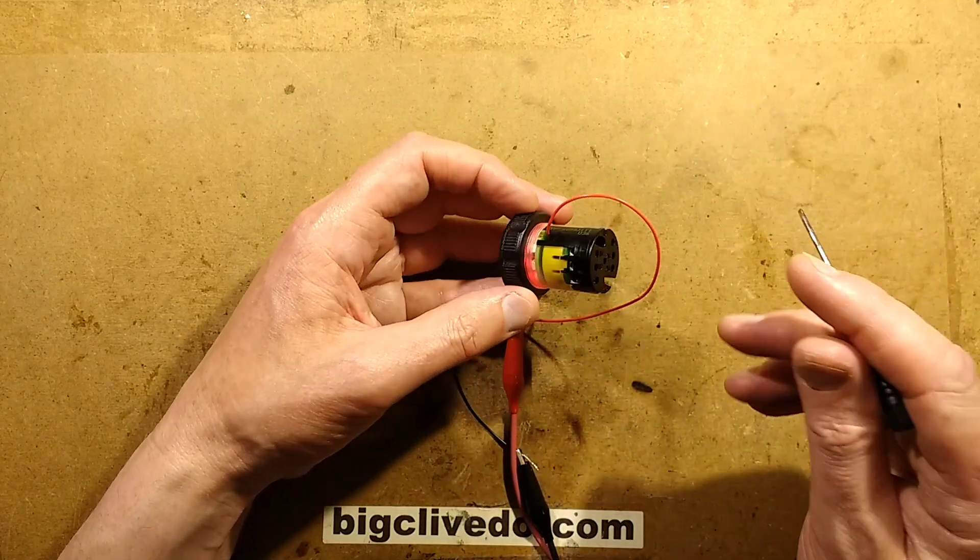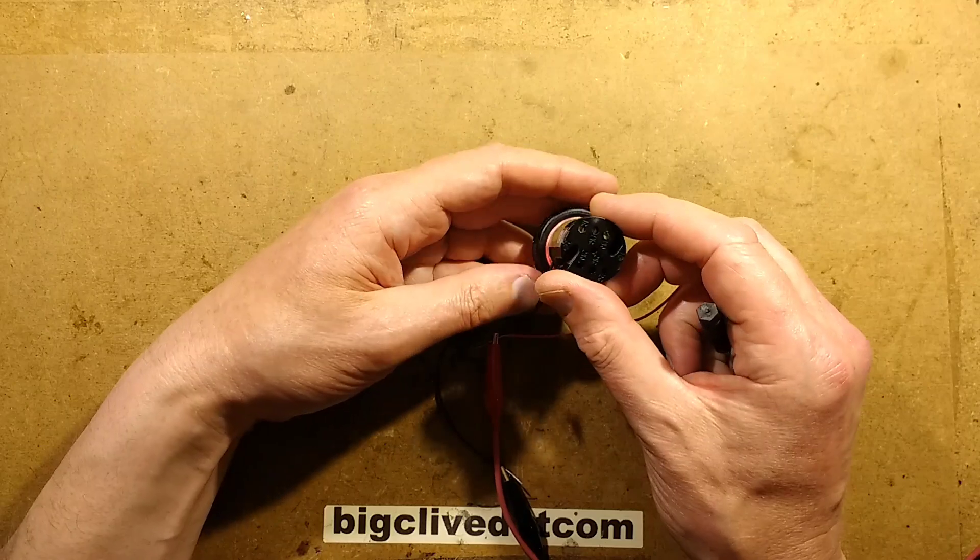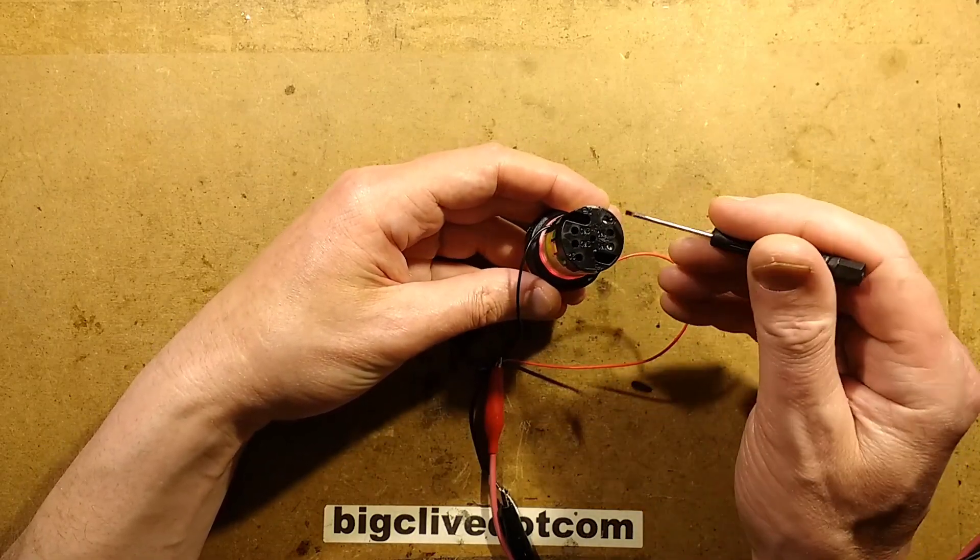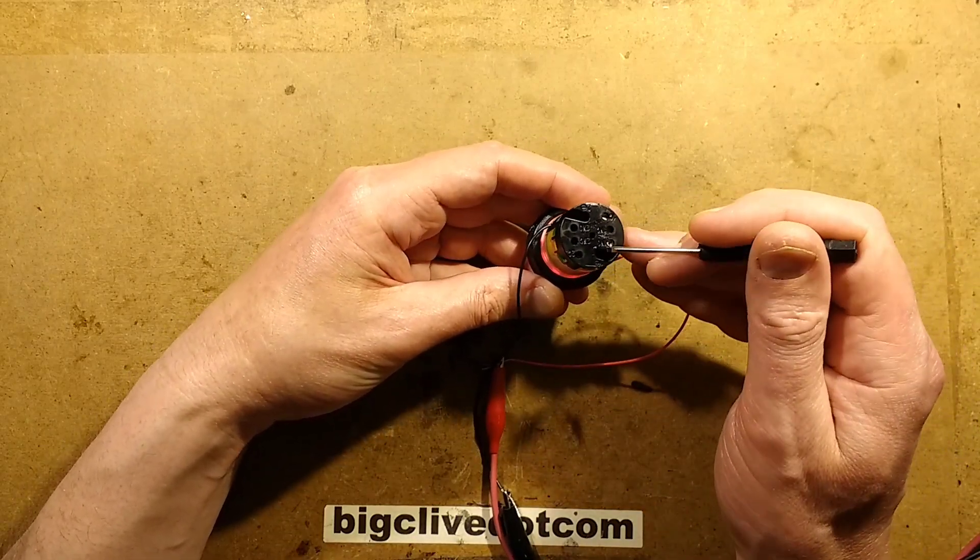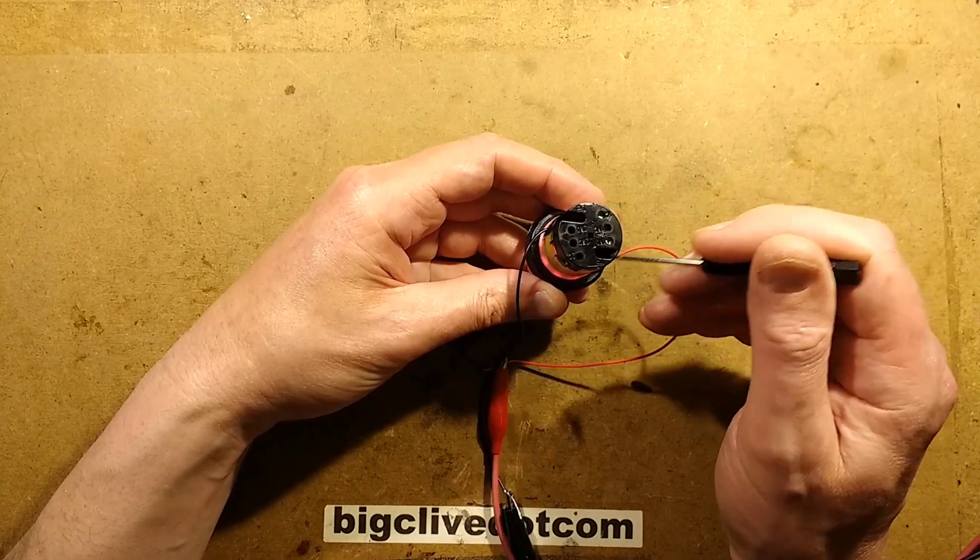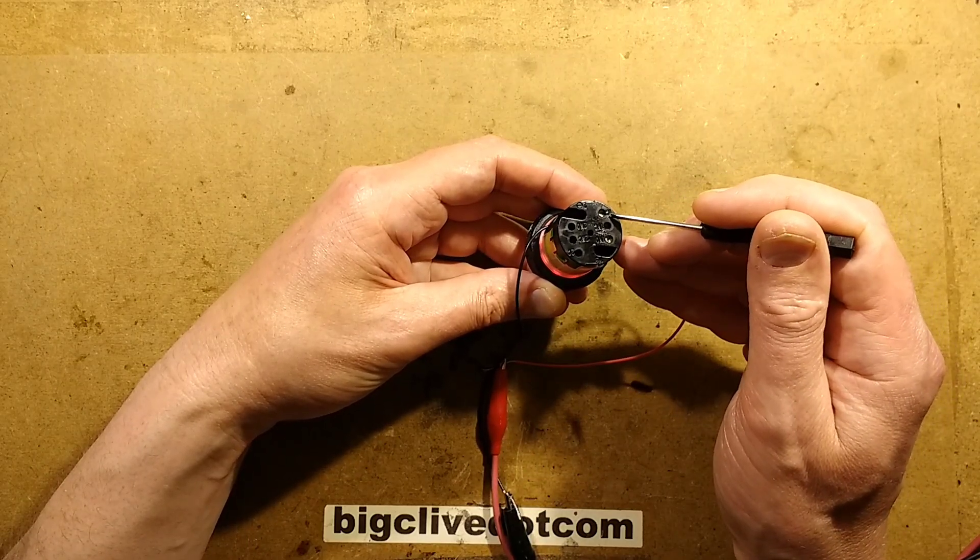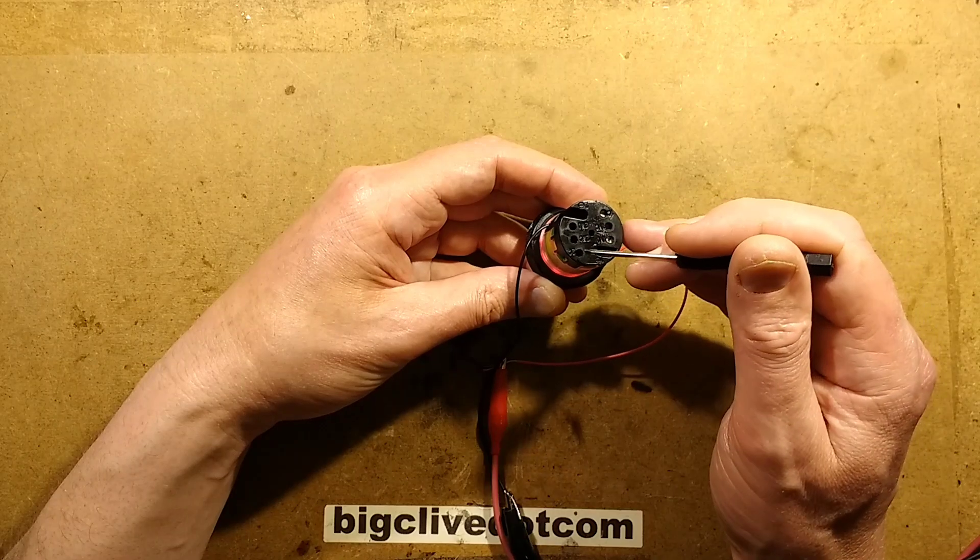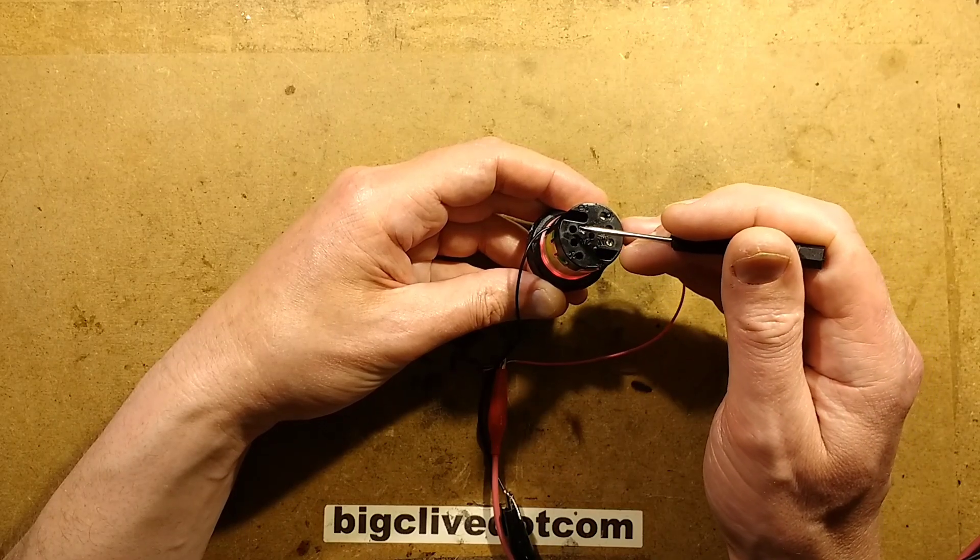It's quite nicely marked. The LEDs are marked one positive, two negative. It has obviously got two switches and it's marked one common, one normally closed, one normally open, and two common, two normally closed, and two normally open.